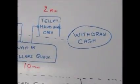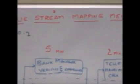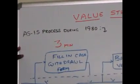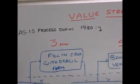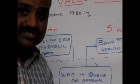Value Stream Mapping Method asks us first define what the value the customer is looking for in a product. The value is most related with customer satisfaction. Here, I have taken an example of an Indian banking system in 1980s. In 1980, if we have to withdraw our cash, what is the process a customer was supposed to go through?